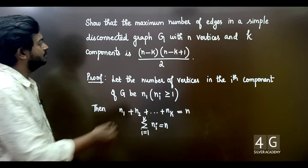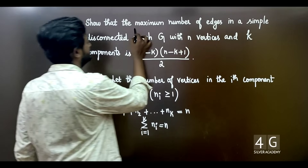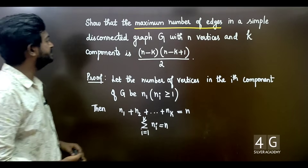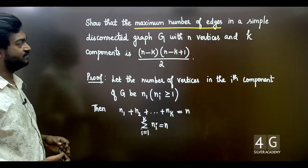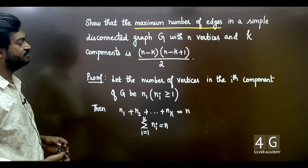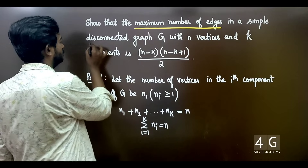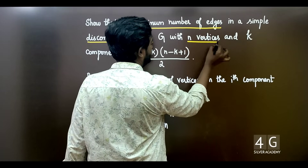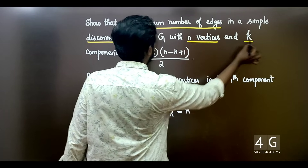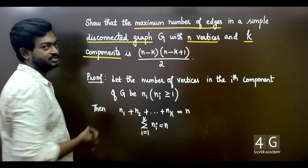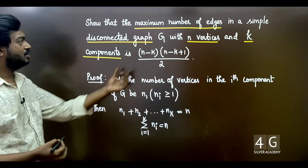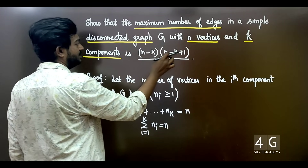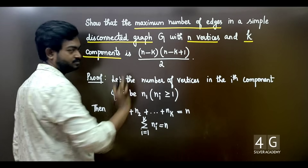Show that the maximum number of edges in a simple disconnected graph G with n vertices and k components is (n-k)(n-k+1)/2.